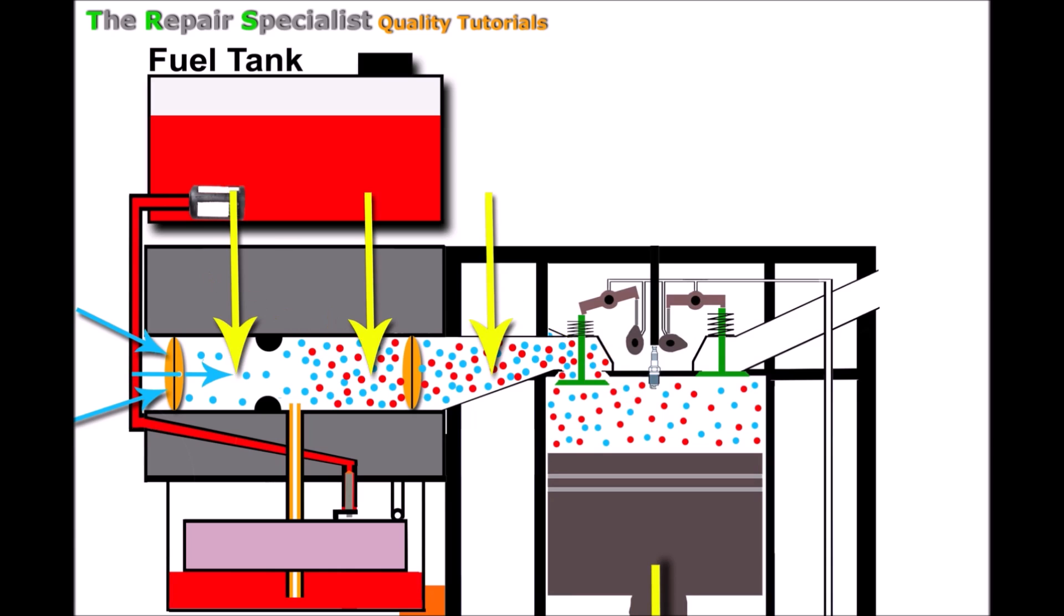Okay, so that vacuum that's building up here, that strong vacuum is felt here on the main jet. So it's sucking up out of the main jet. And to explain this, basically the main jet is like a brass hollow tube that runs all the way down and into the fuel, just like when we put a straw in a glass of soda pop.